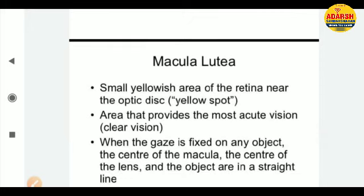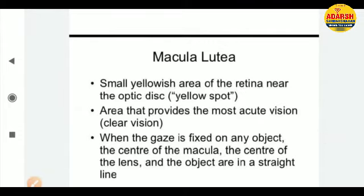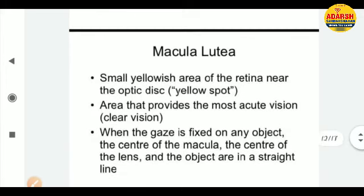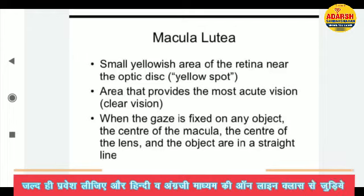Now talking about macula lutea — it is also called the yellow spot. It is a small yellowish area of the retina near the optic disc, situated on the optical axis. This is the place where the most clear image is formed and the most acute vision is provided. The highest concentration of cone cells — responsible for seeing bright colors — is found at the macula lutea.